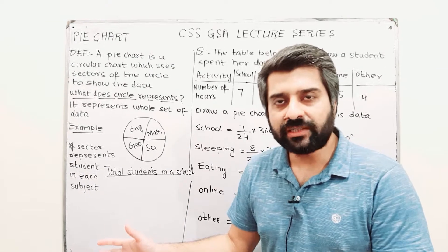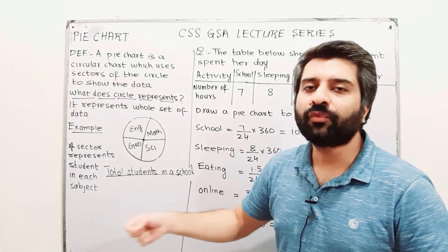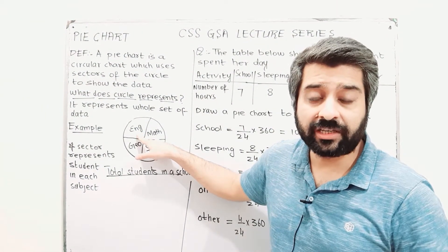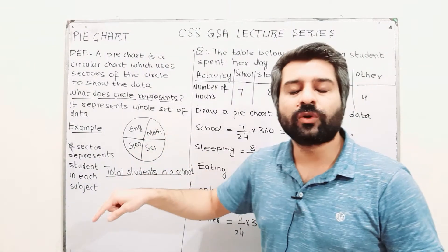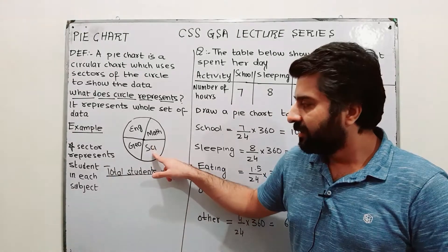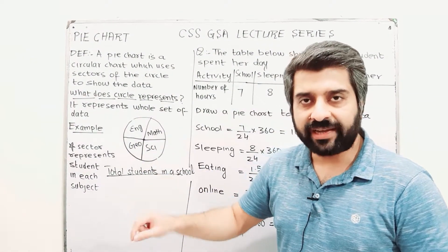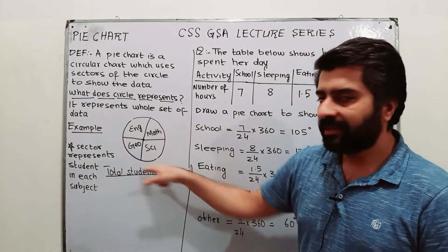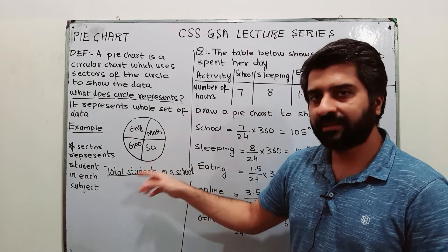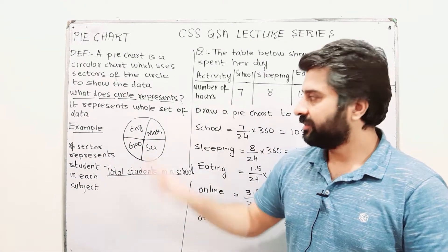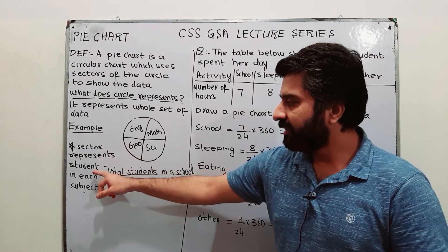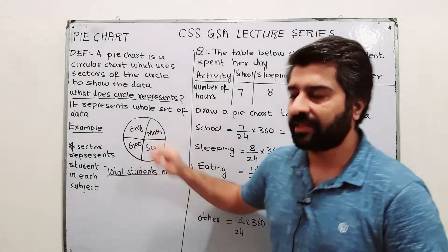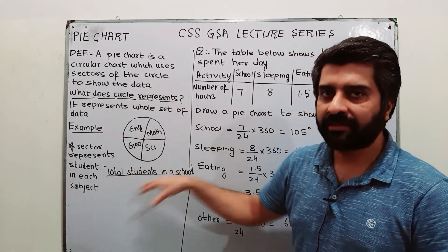Out of those total students, we have classified them into different sectors. This sector belongs to students studying English, this sector to those studying maths, this sector to those studying science, and this sector to those studying geography. So the complete school is represented by the complete circle, divided into different sectors, each representing a particular category. Each sector represents the number of students in each subject, while the circle represents the whole dataset.